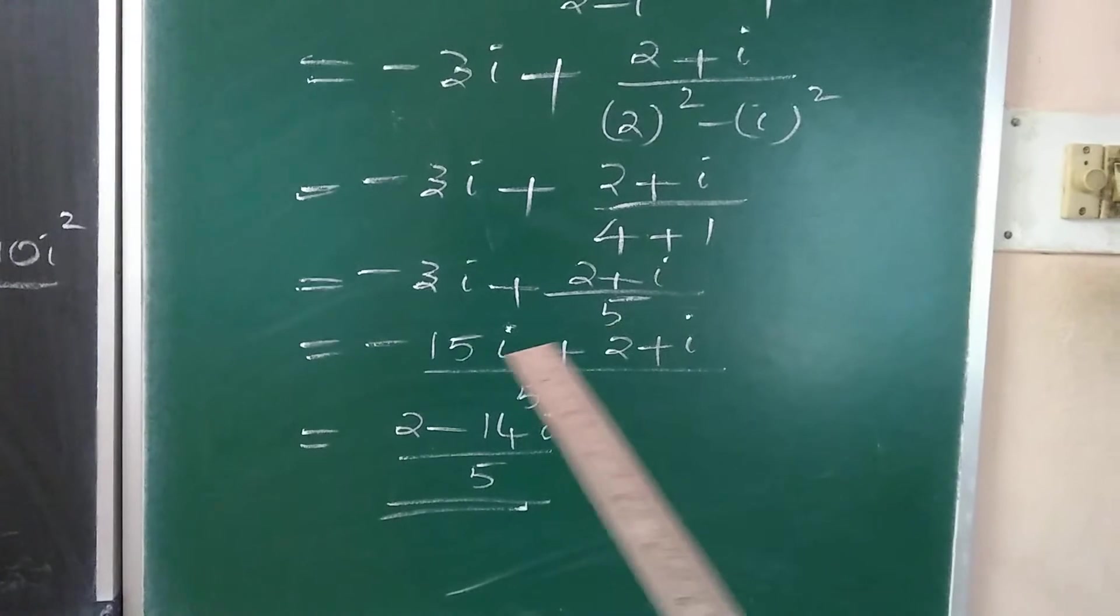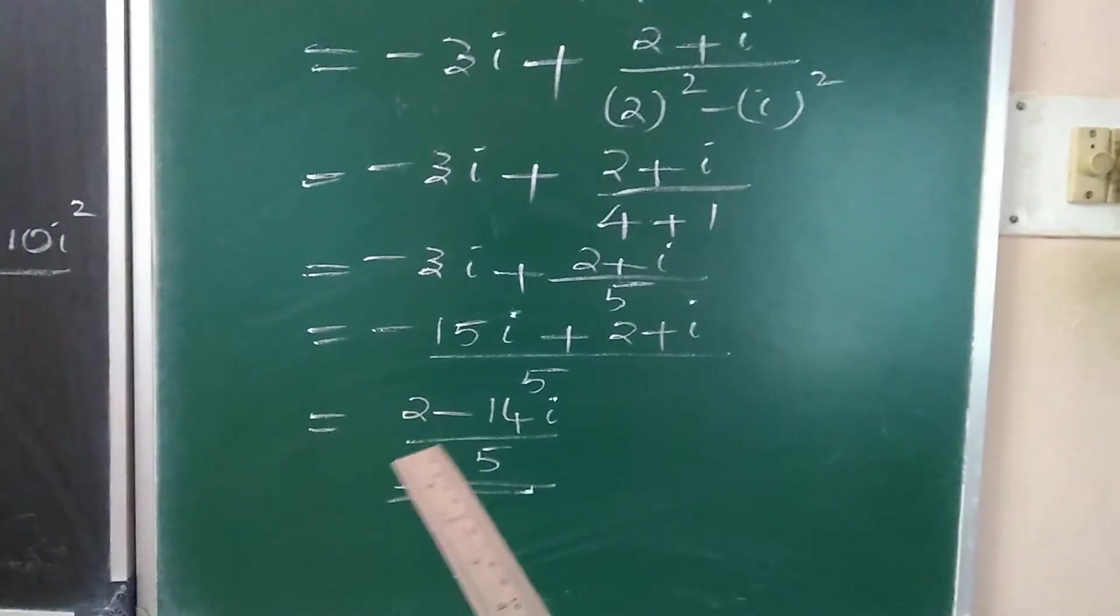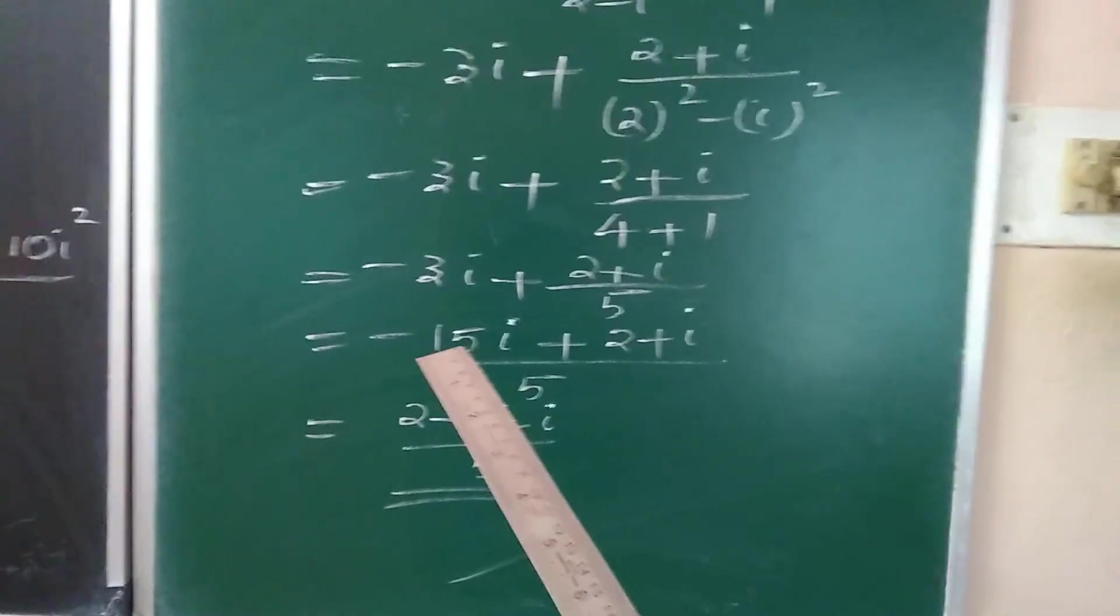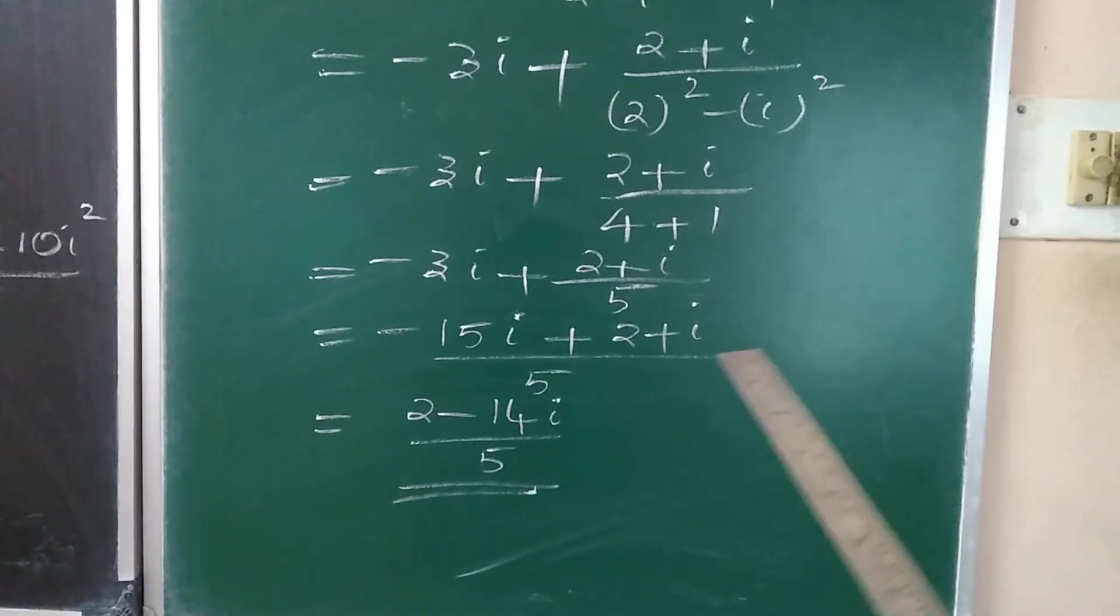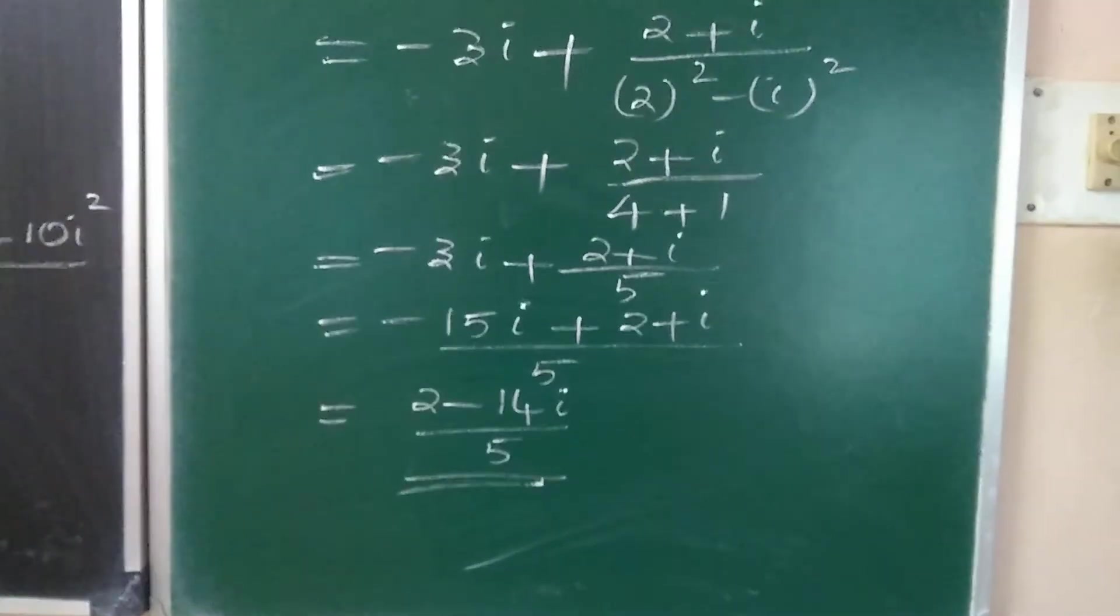Taking LCM now: minus 15i plus 2 plus i divided by 5. So 2 by 5 is the real part and minus 15i plus i is minus 14i. So 2 minus 14i divided by 5.